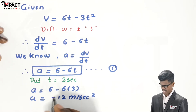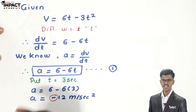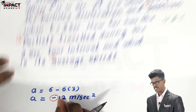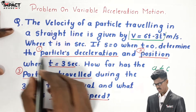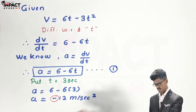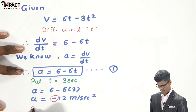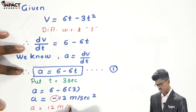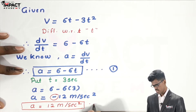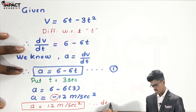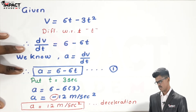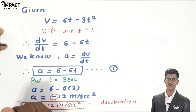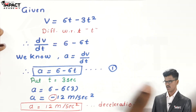The negative sign indicates the acceleration is decreasing — it is a deceleration. So the final answer is a deceleration of 12 m/s². We have found the first unknown: the particle deceleration.